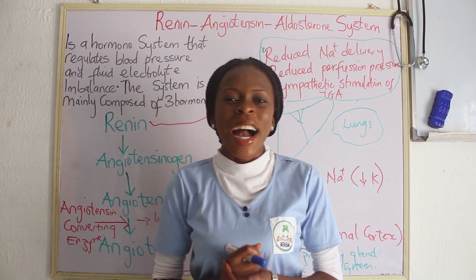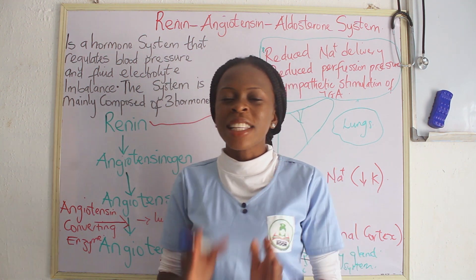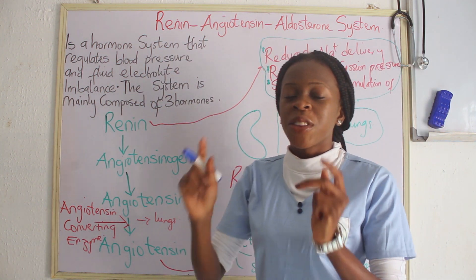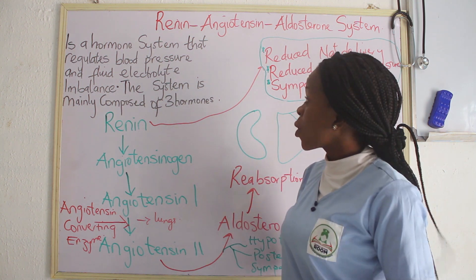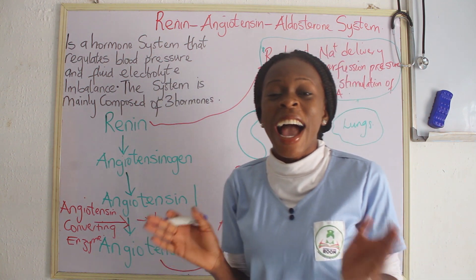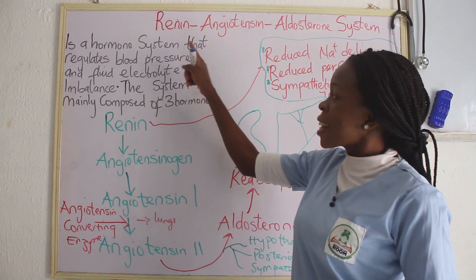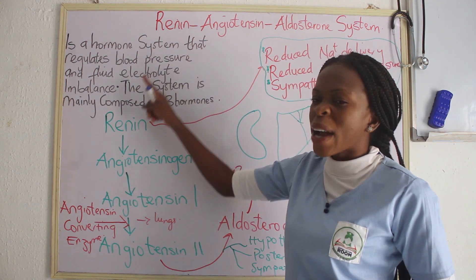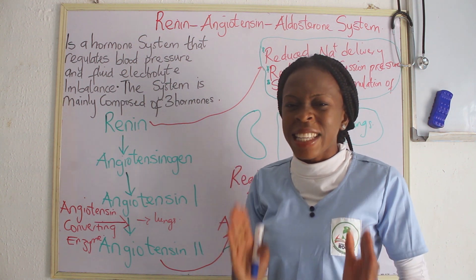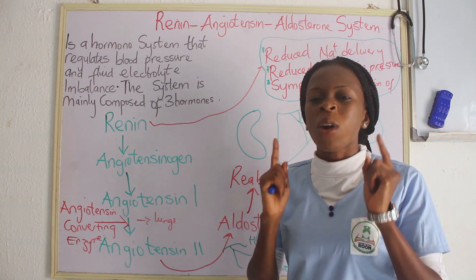Today we're going to be talking about the RAS system, which is the Renin-Angiotensin-Aldosterone System. The RAS system is a hormone system that regulates blood pressure and fluid electrolyte balance.